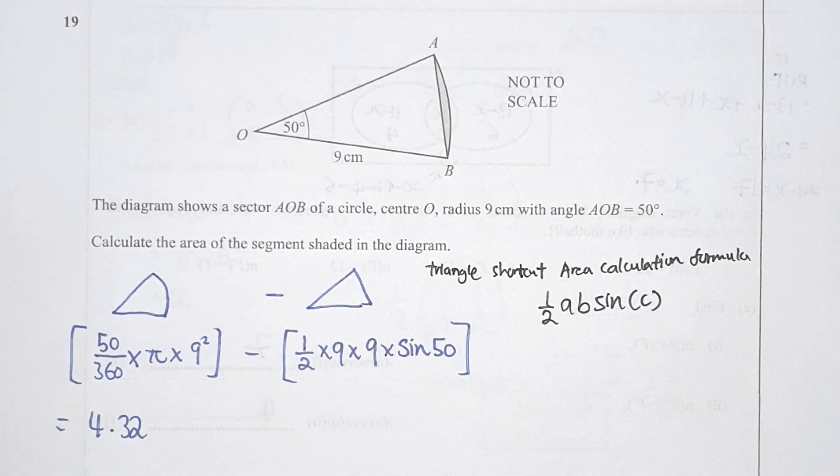Question 19: I first calculated the sector area by taking 50 over 360 times pi times 9 squared, then subtracted half ab sin C — the shortcut formula for the triangle area. The final result is 4.32.